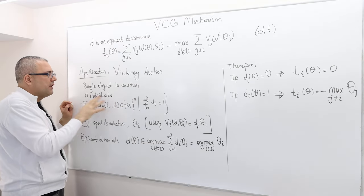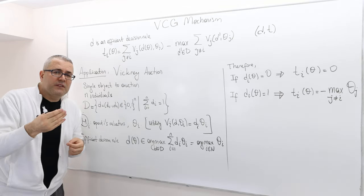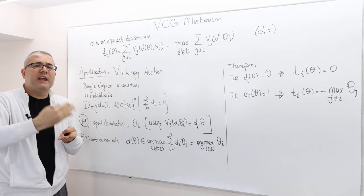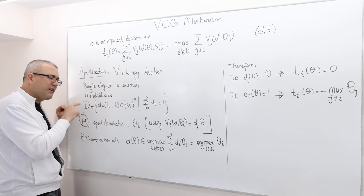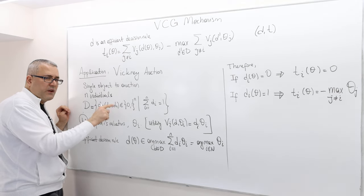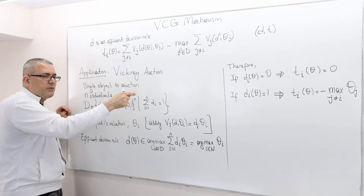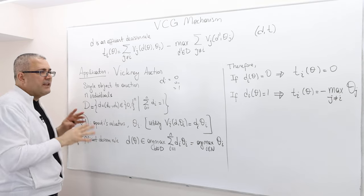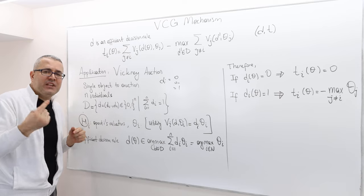Let's suppose there's a single object to auction and there are N individuals. The set of decisions is simple: only one agent is going to own the object or win the auction — we ignore ties. So the set of decisions is a set of N-dimensional vectors D = (D1, D2, ..., DN), where all DI are either 0 or 1, so D is the set {0,1}^N. Each DI is either 0 or 1, and when we sum up all DIs, it has to add up to 1, meaning only one agent is going to win.